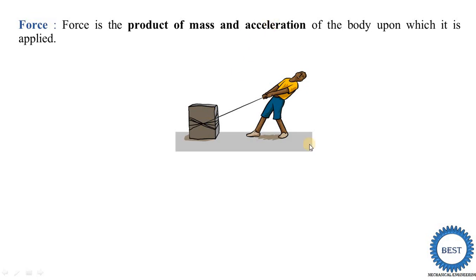How do we find the acceleration? Acceleration is found from the distance. When this person applies force on this body and the body moves from one place to here — suppose this distance is 1 meter — first we find velocity by doing the differential of distance with respect to time. This body is moving 1 meter in 1 second. Then we do the differential of velocity with respect to time to get acceleration.